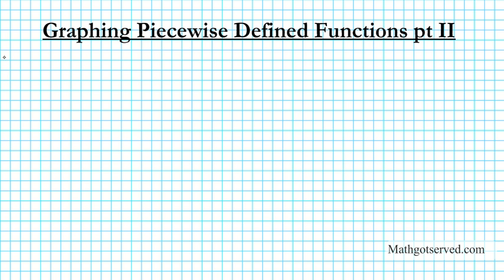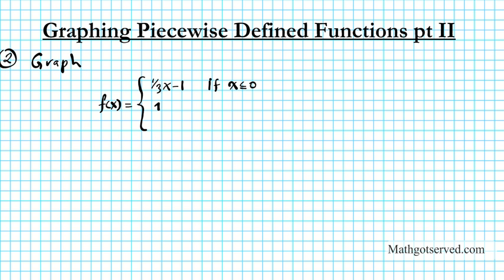Let's write down question number two. In this question we're going to graph the piecewise defined function: f equals one-third x minus 1 if x is less than or equal to 0; 1 if x is between 0 and 3; and then one-third x plus 4 if x is greater than or equal to 3.